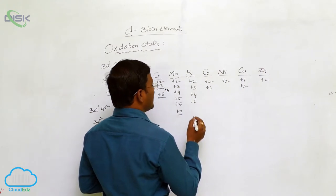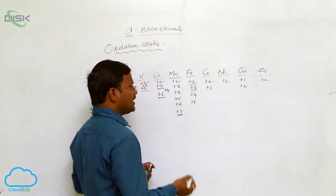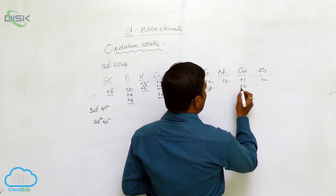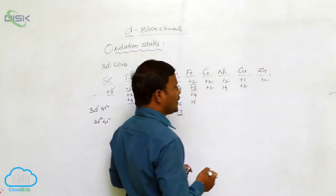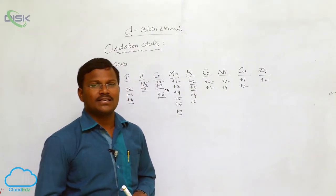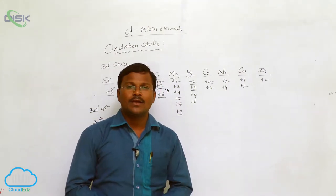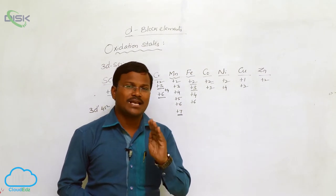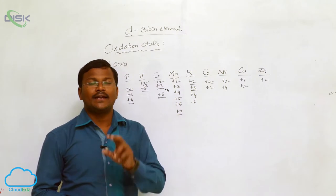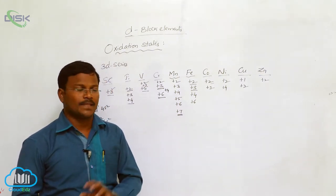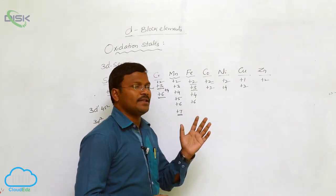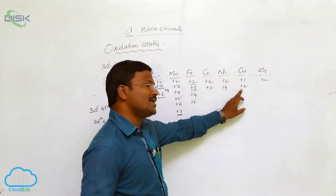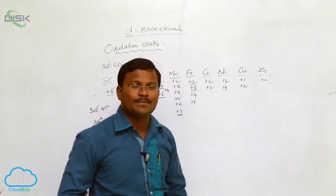For iron, the most familiar oxidation states are +2, +3, very rarely +4, and +6. For cobalt, +2 and +3 are the common oxidation states. For nickel, +2 and sometimes +4. For copper, +1 and +2. In all metals where an element exhibits variable oxidation states, the lower oxidation state species is called 'ous' and the higher oxidation state species is called 'ic'. So copper in its +1 oxidation state is called cuprous, and in its +2 state is called cupric.